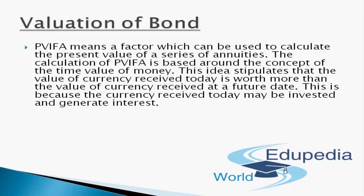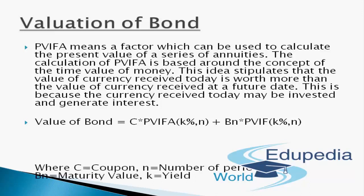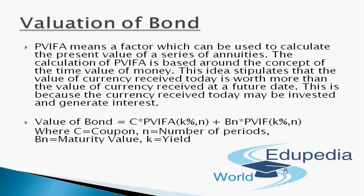So if we need to find the value of a bond, we use the formula: Coupon rate multiplied by PVIFA(K, N) plus BN multiplied by PVIF(K, N), where C means the coupon rate, N means the number of periods, BN means the maturity value, and K means the yield, that is the required return. Let's understand this topic with the help of an example.